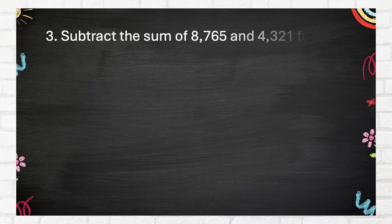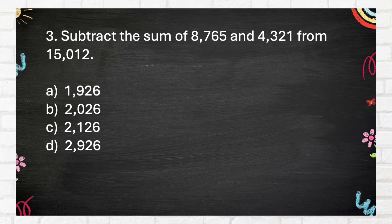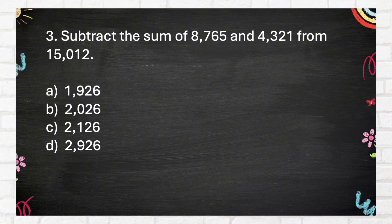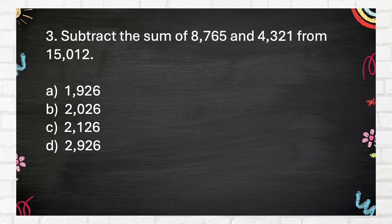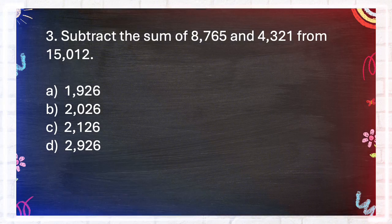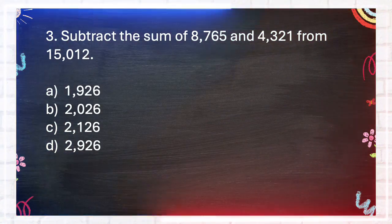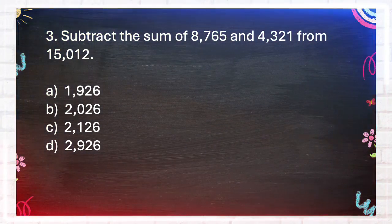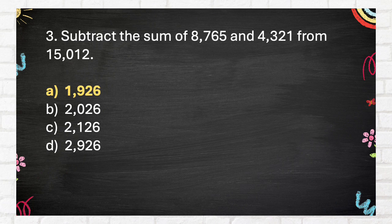Question number 3. Subtract the sum of 8,765 and 4,321 from 15,012. A. 1,926, B. 2,026, C. 2,126, D. 2,926. The answer is A. 1,926.